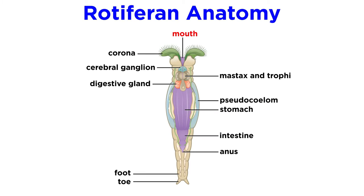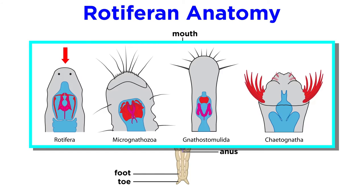The mouth is located in the corona on the mid-ventral side. Within the mouth, rotifers have a muscular mastax and trophi, which form the complex jaw, characteristic of all animals within clade Gnathifera, though the rotiferin jaw is distinctly different from those of micrognathozoans and gnathostomulids, as well as chaetognaths.